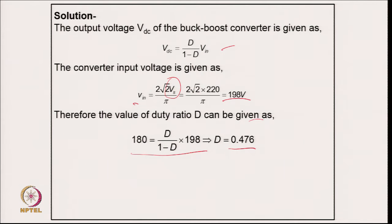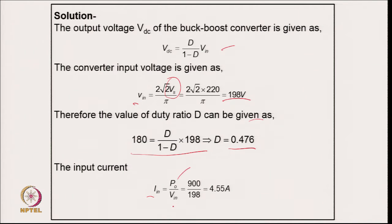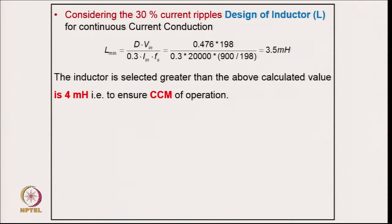Since the duty cycle is less than 0.5, the converter is operating in buck mode. The average input current at the output of the diode rectifier is calculated as power divided by average voltage: 900 divided by 198, giving 4.55 A.